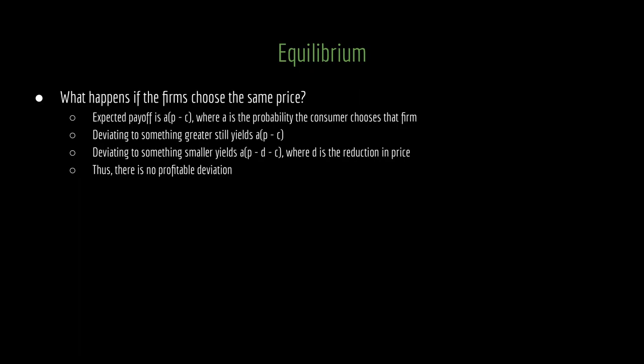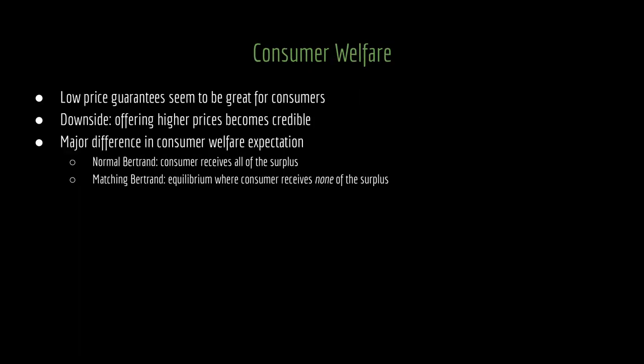Since neither firm can profitably deviate, it is an equilibrium for both firms to choose a price equal to the consumer's reservation value V. The reason is that offering higher prices becomes credible. Under standard Bertrand competition, a firm offering a high price must worry its competitor will undercut it. But with a low price guarantee, it becomes impossible for your competitor to undercut you — whatever they undercut by, you can match it. So it becomes credible to offer higher prices, and both firms can choose to do that.